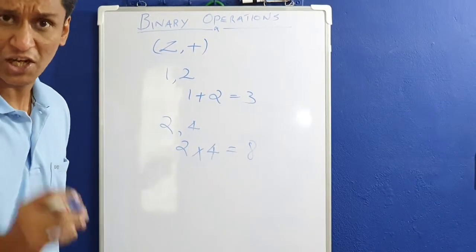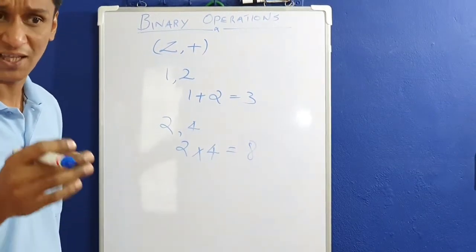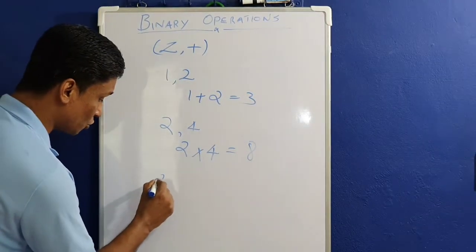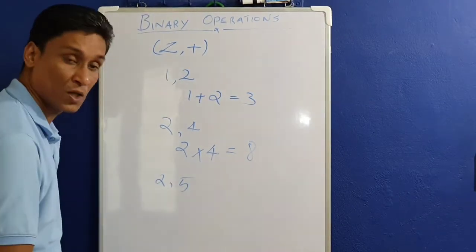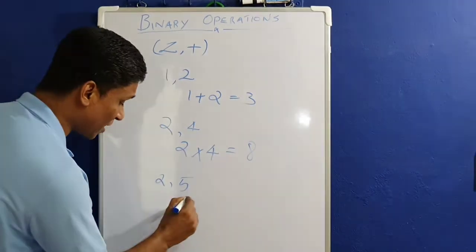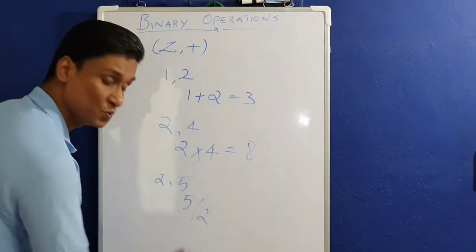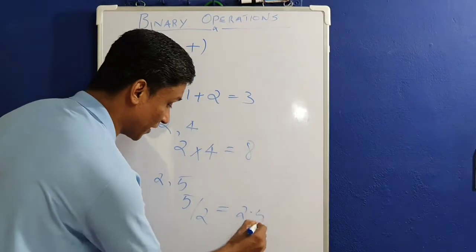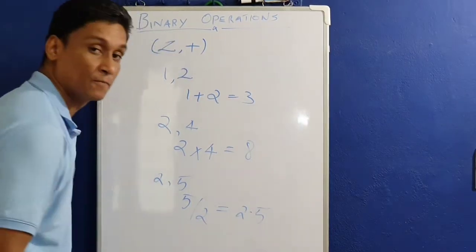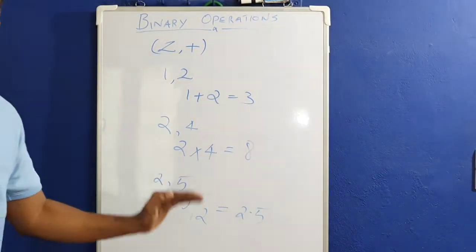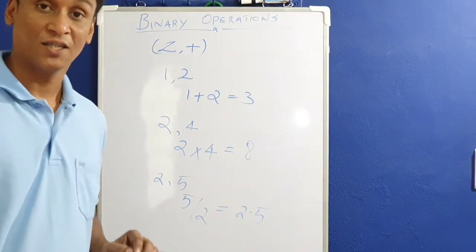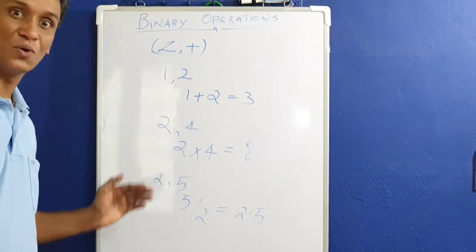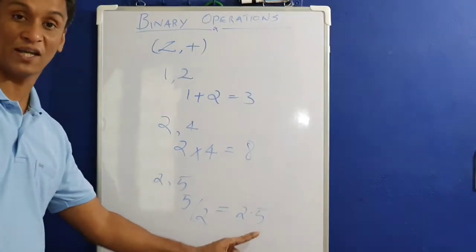Now I am taking two integers: 2 and 5. I am dividing 5 by 2, and you get 2.5. The result 2.5 is not an integer.